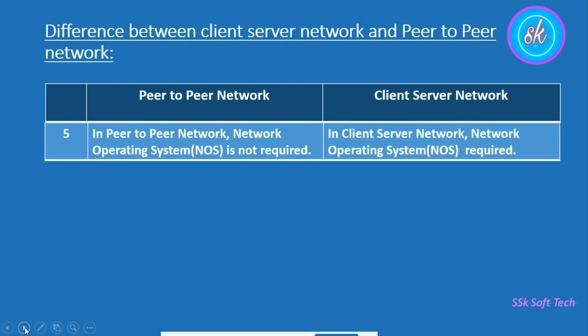But in a client-server network, the network operating system is required. In client-server network, all the resources are present on the server computer. So for the server, a special network operating system is required to manage all those resources, monitor the traffic exchange, and also the flow of files. So the network operating system is required in client-server network.